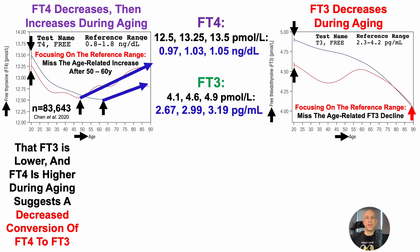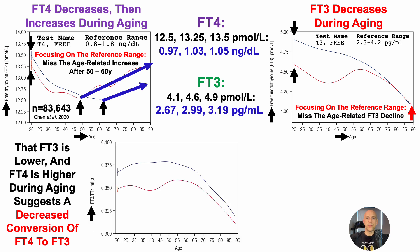The fact that free T3 is lower and free T4 is higher at older ages — after around 50 to 60 — suggests a decreased conversion of free T4 into the active thyroid hormone, free T3, during aging. Looking at the free T3 to free T4 ratio may therefore be more informative. In youth or relative youth younger than around 50 to 55 years old, average values for this ratio are about 0.35 to 0.38 for both women and men.